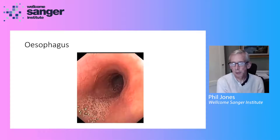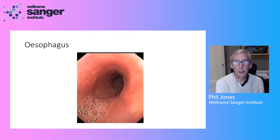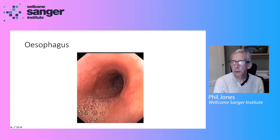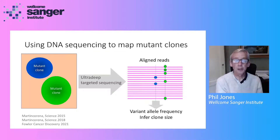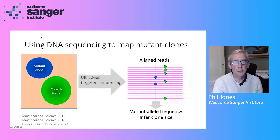This is a view of the human esophagus, which connects your mouth and your stomach. We're going to be focusing on the pink lining of this tissue that you can see around the central lumen. A few years ago, we wanted to understand whether there were mutations in this pink lining epithelium, and the way you can do this is to use DNA sequencing.